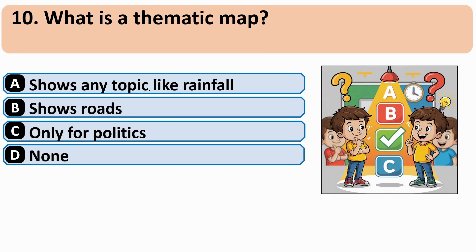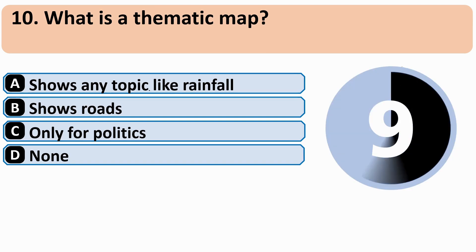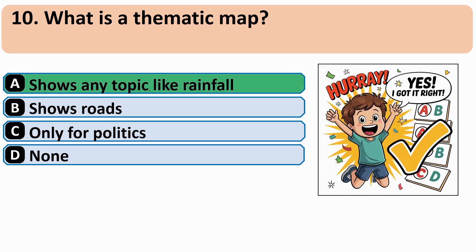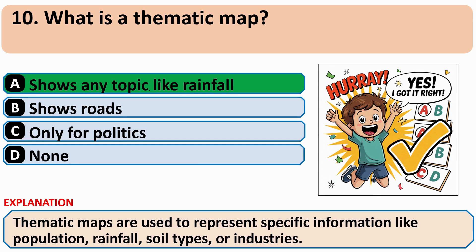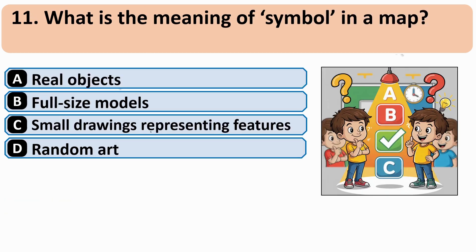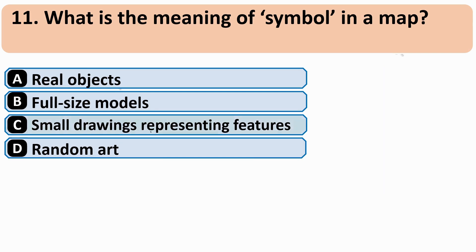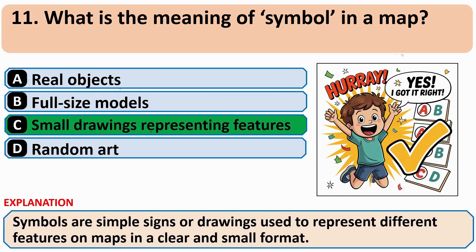What is a thematic map? The correct answer is A — it shows any topic, like rainfall. What is the meaning of a symbol in a map? The correct answer is C — a small drawing representing features.